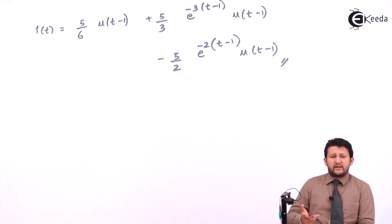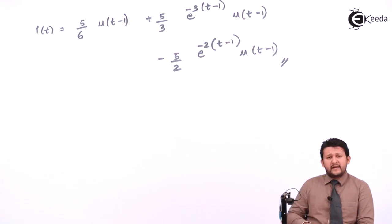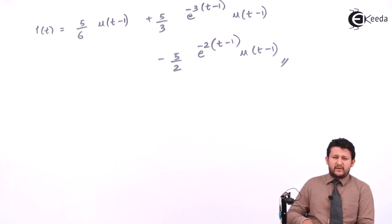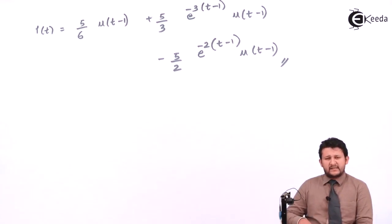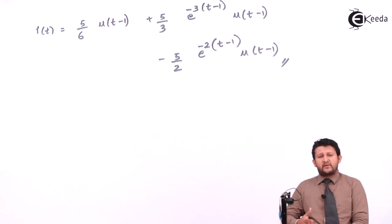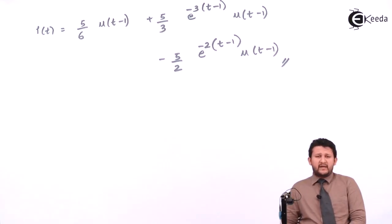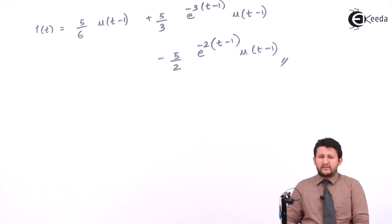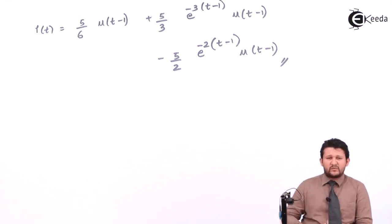If the voltage will be in terms of sine, Laplace of sine omega t, omega upon S square plus omega square. If it would be in cos, so S upon S square plus omega square. So all these formulas, my dear friends, we will be doing in M3 as well, but we study this formula before solving this time. Thank you so much guys, signing off. Hope you enjoyed this chapter, thank you.